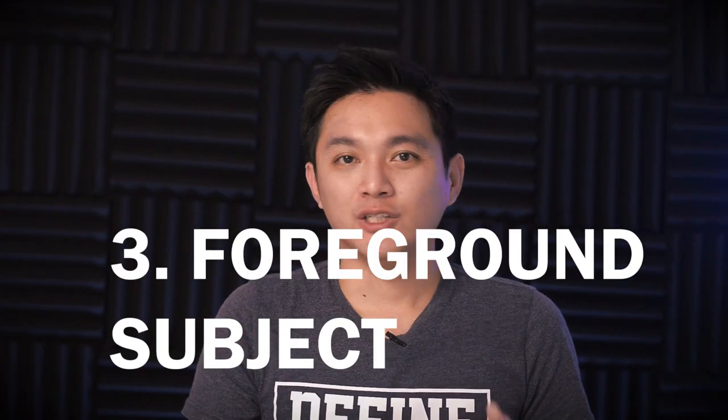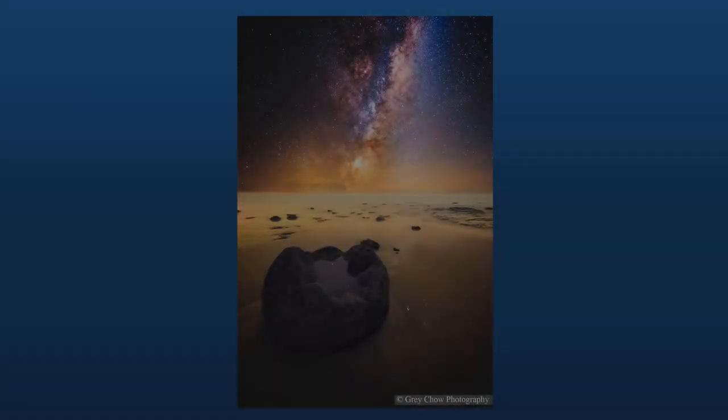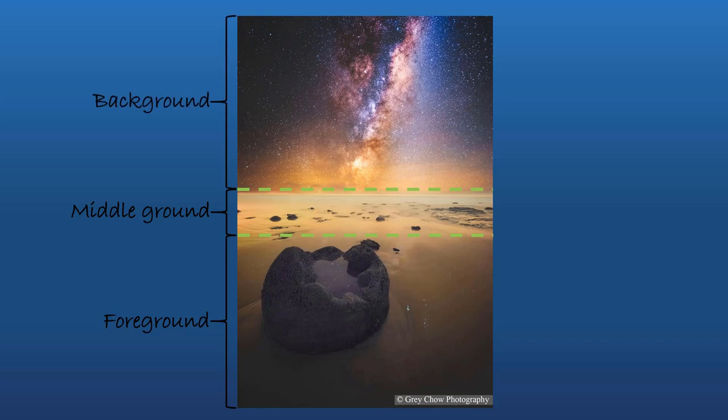Next is the foreground subject. Usually you can split a landscape photo into three different sections: foreground, middle ground, and background. By putting a good foreground subject, you can add more depth to the photo and make it look more three-dimensional. Here's one of my photos that includes a foreground subject — a huge boulder at the Moeraki Boulder Beach in New Zealand. The boulder is very interesting, and there are a few dots of stars reflected on the water. Including this foreground subject gives a sense of distance, indicating that the boulder is close to the viewer and the Milky Way is in the background.